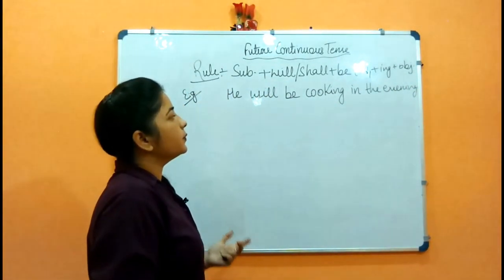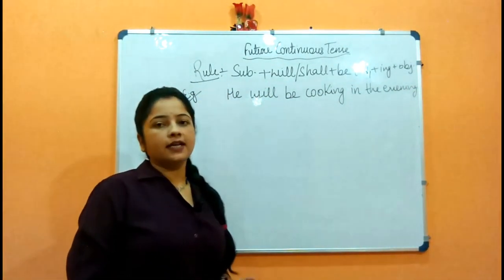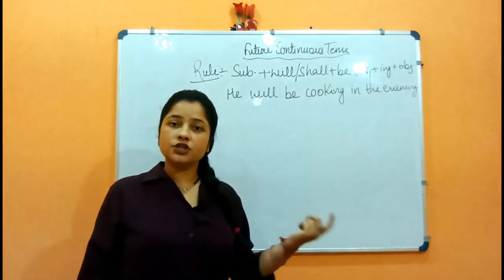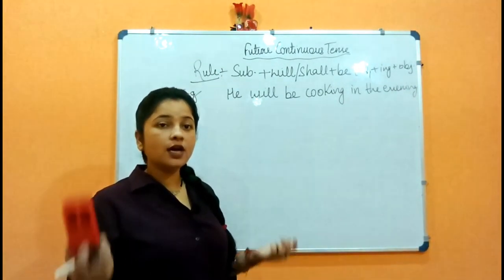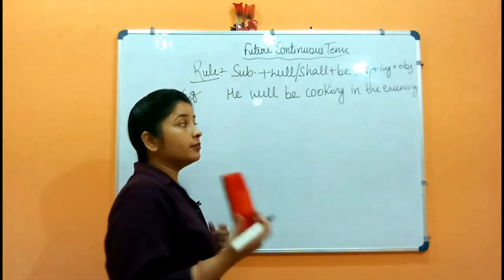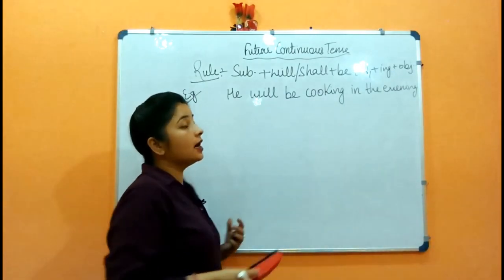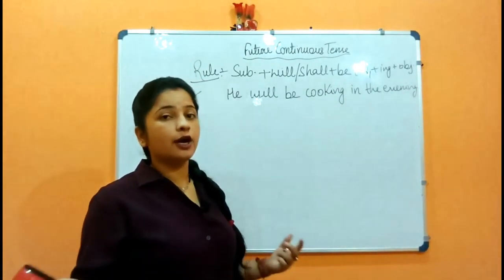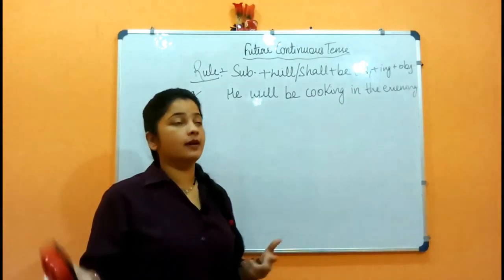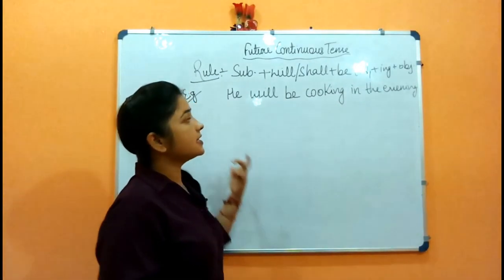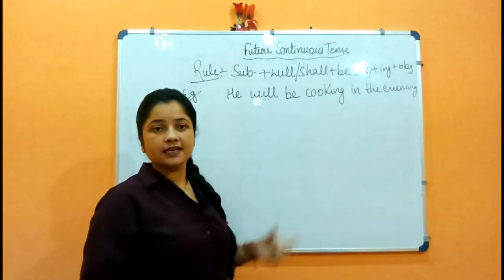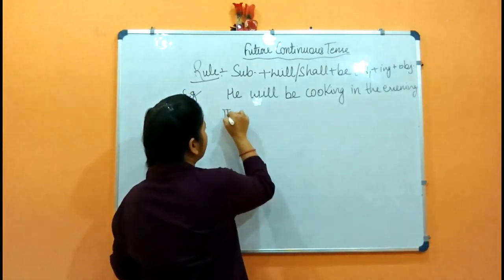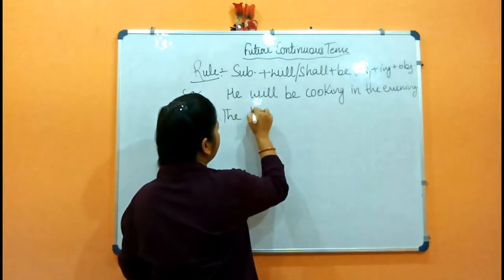For example: 'He will be cooking in the evening' — वह खाना बना रहा होगा शाम को. So in the evening he will be cooking. Sometimes we might say we'll go to his house, but someone would say no, he will be cooking in the evening, so he won't be able to go. This is how such sentences come.